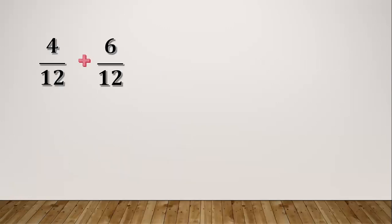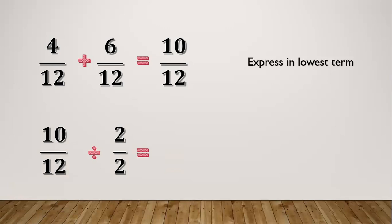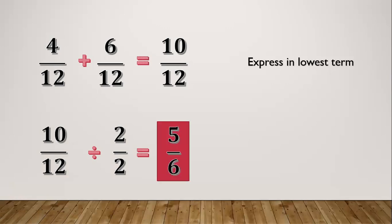Another example: four twelfths plus six twelfths. Same process — four plus six equals ten. Copy the denominator which is twelve, giving ten twelfths. Express in lowest terms by finding the greatest common factor. Divide by two: ten divided by two equals five and twelve divided by two equals six. Our final answer is five sixths.